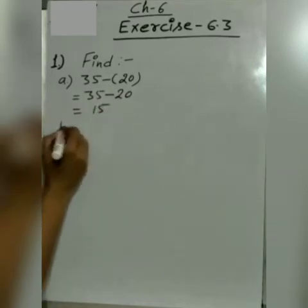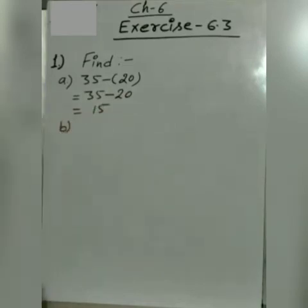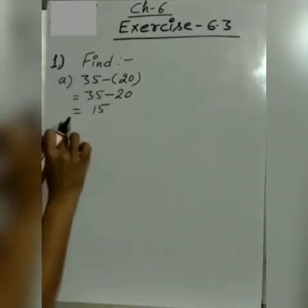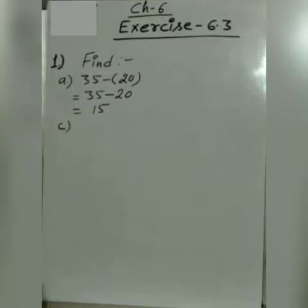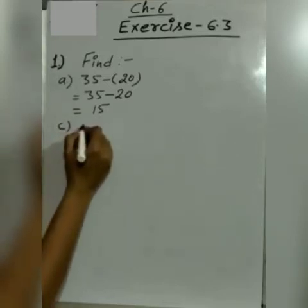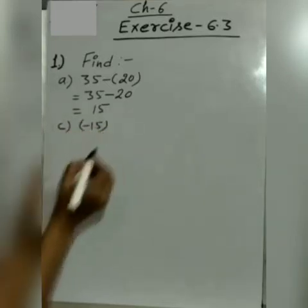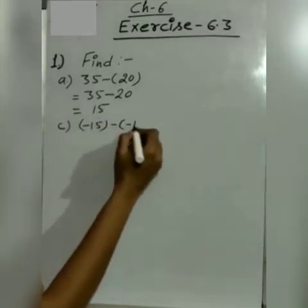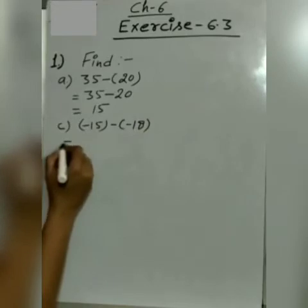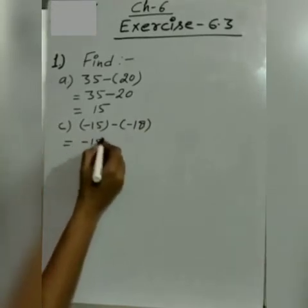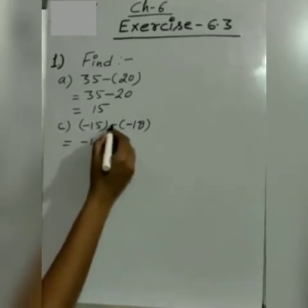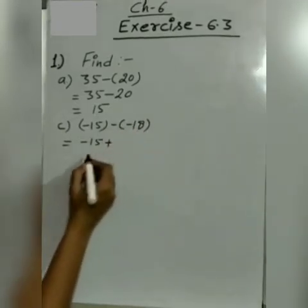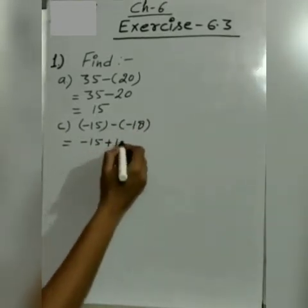Second part, this is the C part. The B part is the same. C is minus 15 bracket minus, minus 18. Minus 15 minus and minus. When minus is multiplied by minus it becomes plus. Minus 15 plus 18.